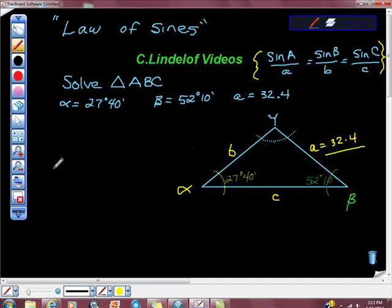Remember that 1 degree equals 60 minutes, so we have to get our unit conversion here. We also have beta is 52 degrees, 10 minutes, and then we're given side a is 32.4, so we go from alpha out to A.